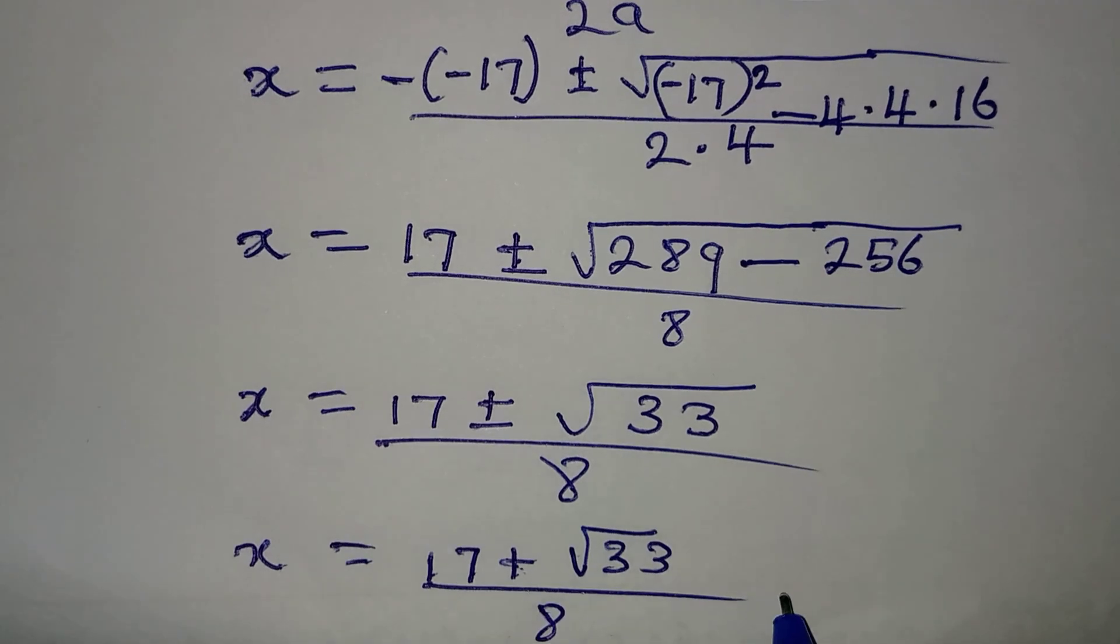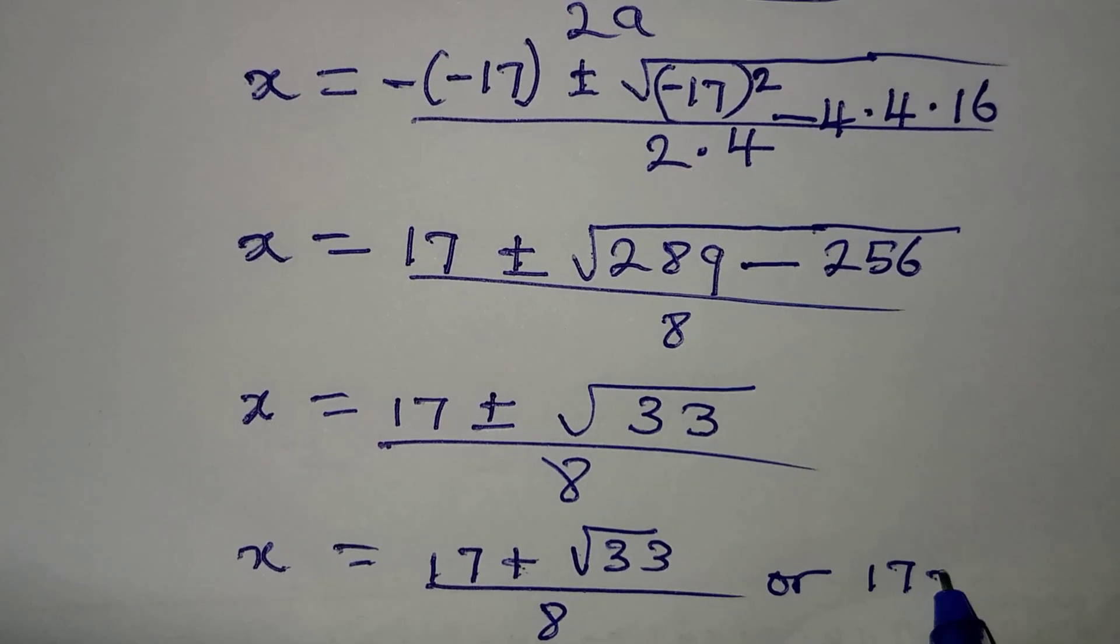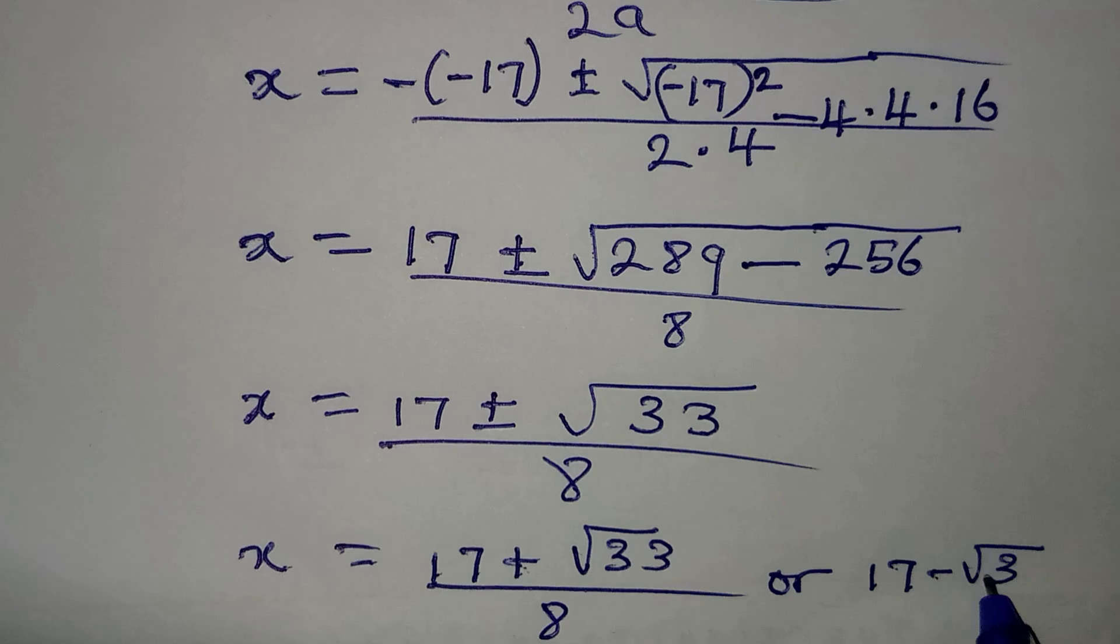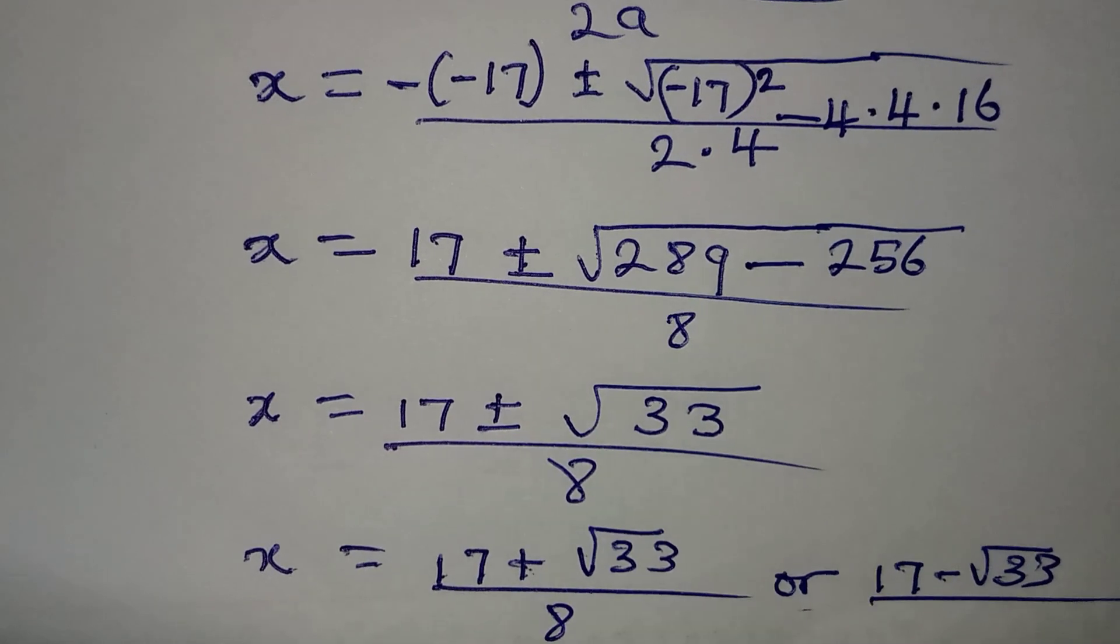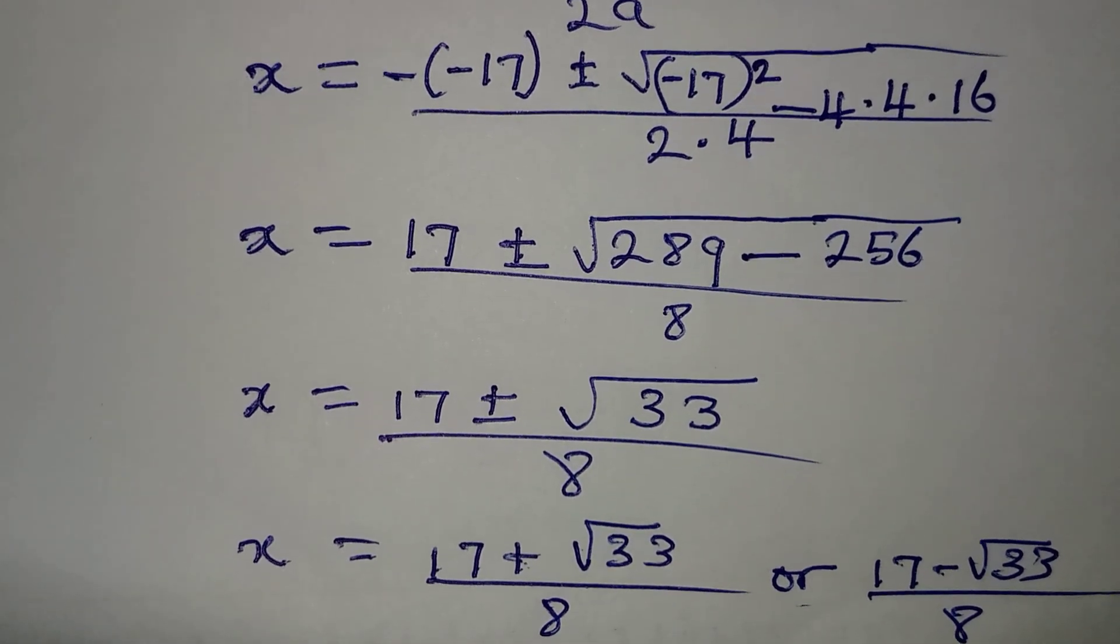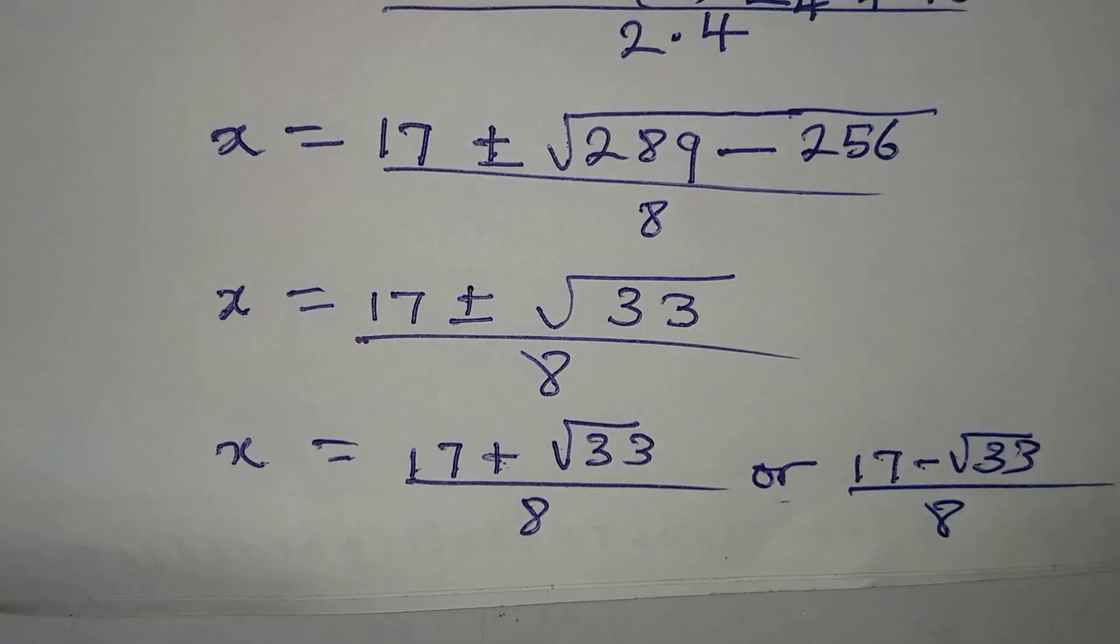So x = (17 + √33)/8 or x = (17 - √33)/8. This is what we have now with these two.